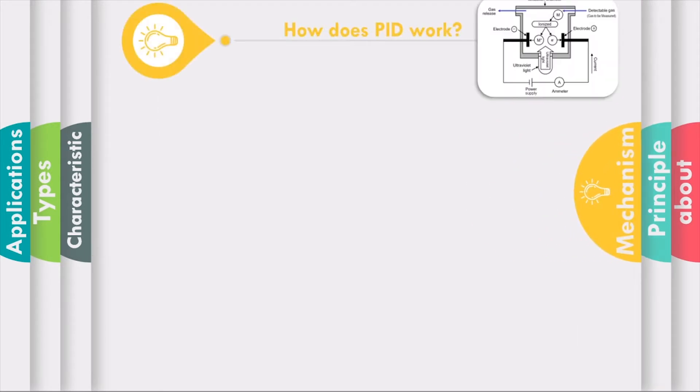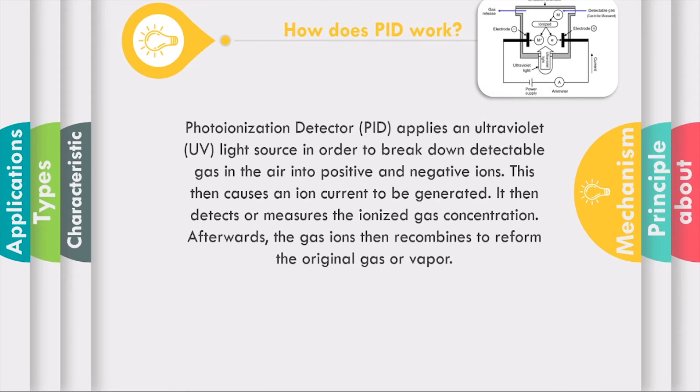Now we know the principle behind PID. Next, we ought to know how does PID work. Generally speaking, photoionization detector, or PID, applies an ultraviolet UV light source in order to break down detectable gas in the air into positive and negative ions. This then causes an ion current to be generated, just like voltaic cells.